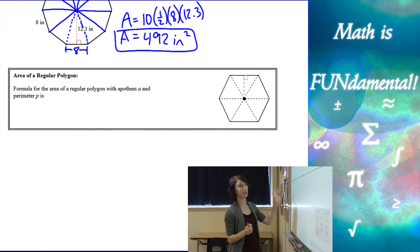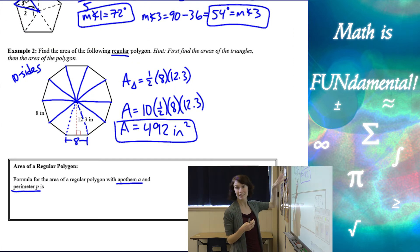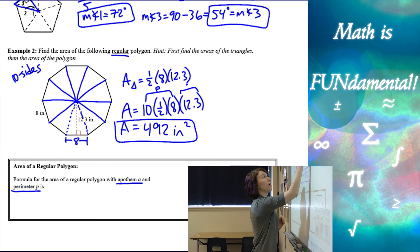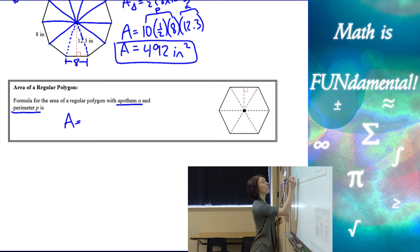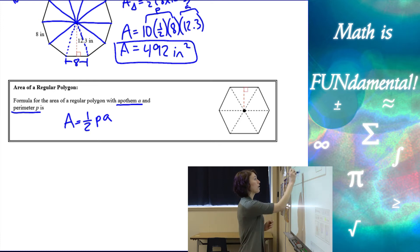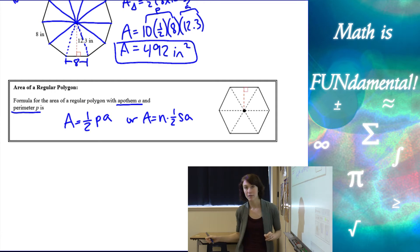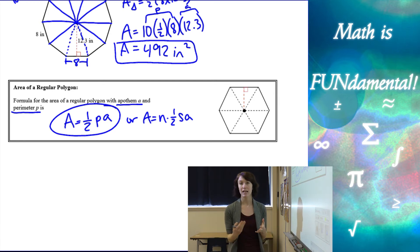Let's put it into a formula box. If I know the apothem A and the perimeter — here we could find the perimeter another way: eight times 10 is going to be my perimeter, and 12.3 was the apothem. So I can see my formula is going to be one half of the perimeter of our shape times the apothem. Or you can think of it as the number of sides times one half base times the side length times the apothem. I really like using the perimeter P and the apothem.